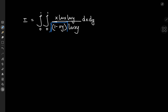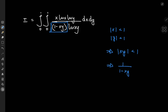This term is going to help in that regard. Notice that for the region of integration, the absolute value of x and the absolute value of y are both less than 1. This means the absolute value of xy is also less than 1, which implies we can expand the reciprocal of 1 minus xy as a geometric series — the sum over non-negative integers n of (xy)^n.